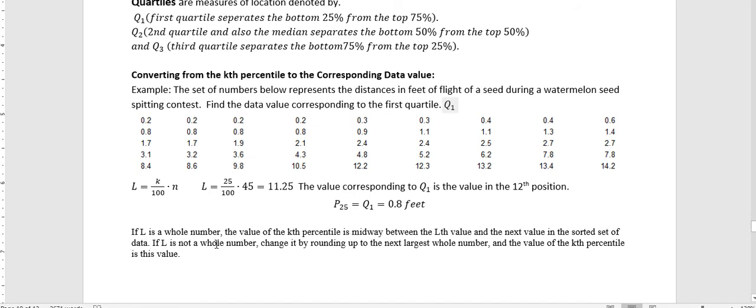Now, if L is a whole number, like we had a decimal value here, right? But if it came out to be a whole number, then the value is halfway between. So let's say we got 3, then the value would be between 3 and 4, and we would take the average of those two things. So if it's a whole number, you take the average of the L value and the next value. If it's a decimal, we just round up to the next whole number to get that.